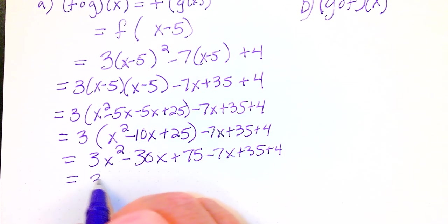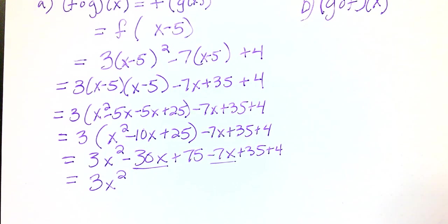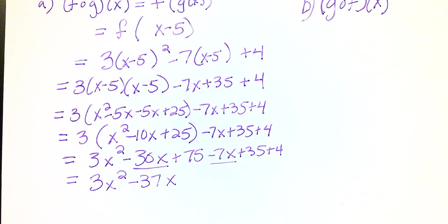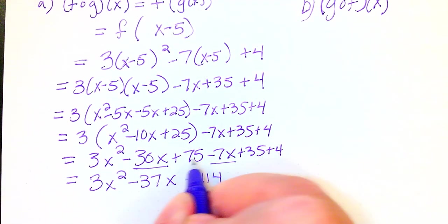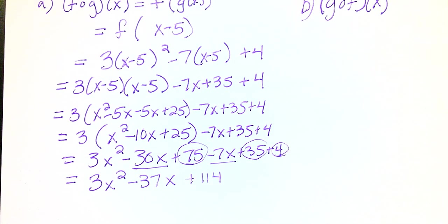So this is going to be 3x squared minus 30x minus 7x is minus 37x. And then we have 75 plus 35 plus 4 and that's going to give us 114. So that was 75 plus 35 plus 4, 114. That is our f of g of x.